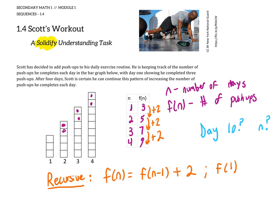You can even imagine if there was a day zero, which there's not, and I backtrack the pattern, he would have done one push-up on day zero. That's something interesting to consider. But we're starting with f(1) being three push-ups on the first day, and that's going to be important when we write our explicit formula.